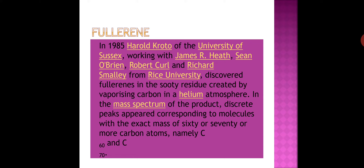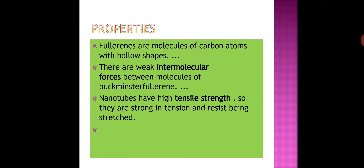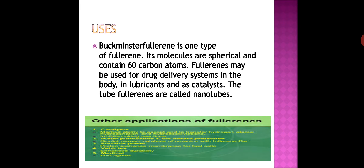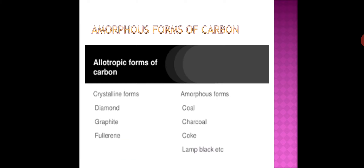Molecules of fullerene are found in the form of buckyballs and buckytubes. There are 30 to 900 carbon atoms in one molecule of fullerene. Fullerene are soluble in organic solvents such as carbon disulfide and chlorobenzene. There are weak intermolecular forces between molecules of buckyballs. Nanotubes have high tensile strength so they are strong in tension and resist being stretched. Fullerene are used as insulators, catalysts, in water purification, and at low temperatures they exhibit superconductivity. They are spherical and used for drug delivery systems in the body, as lubricants, catalysts, and tube fillers known as nanotubes.